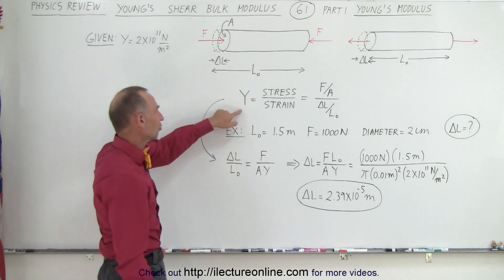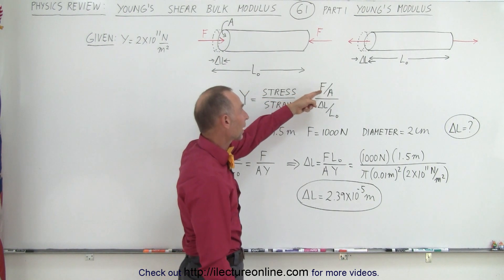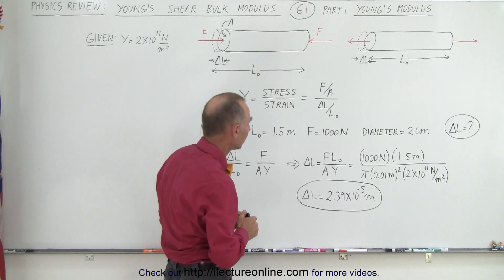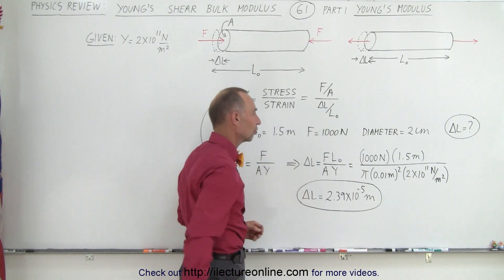We know that Young's Modulus is the ratio of the stress over the strain. The stress is the amount of force you apply per unit cross-sectional area. And the strain is the ratio of the change in the length divided by the original length.